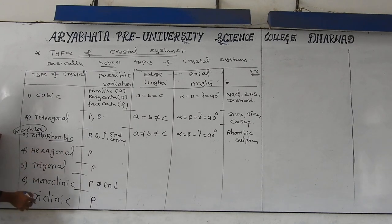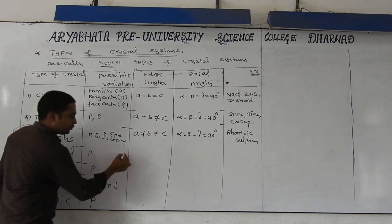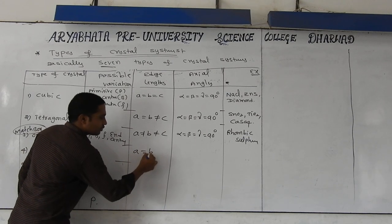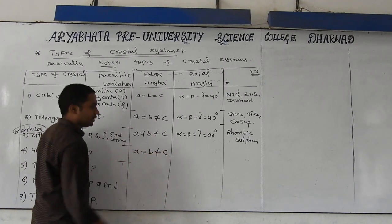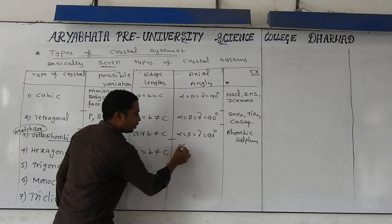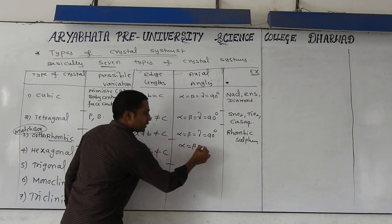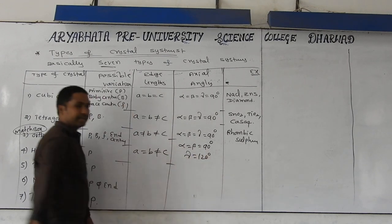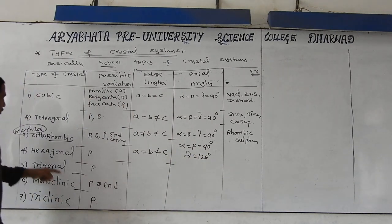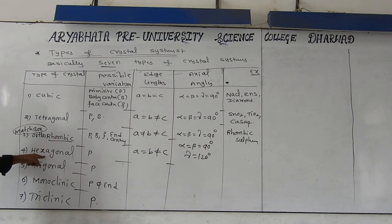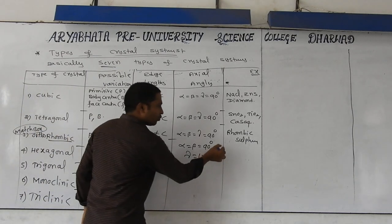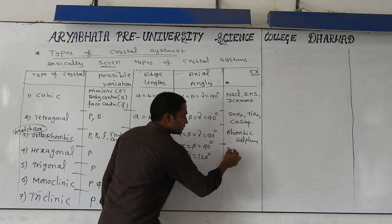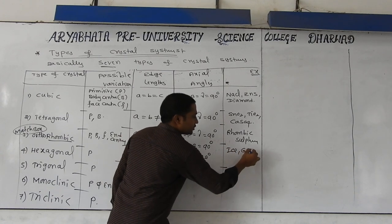For hexagonal: only primitive variation is possible. Edge length relation: a = b, but not equal to c. Angles: alpha = beta = 90 degrees, but gamma = 120 degrees. The geometry coming is hexagonal shape. Examples that have hexagonal crystal system: ice as well as graphite.